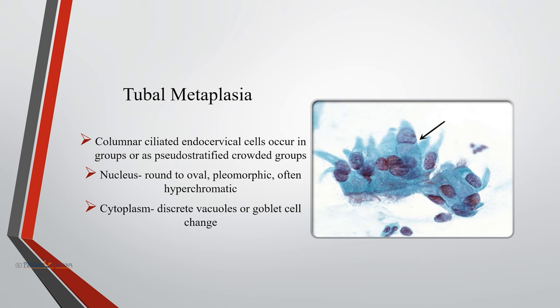Tubal metaplasia is a metaplastic phenomenon in which the normal squamous epithelium is replaced by epithelium that recapitulates the epithelium of the normal fallopian tube. Here, columnar ciliated endocervical cells occur in groups or as pseudostratified crowded groups. The nucleus is round to oval, pleomorphic, often hyperchromatic, with discrete cytoplasm that contains discrete vacuoles or goblet cell change, as seen in this image.